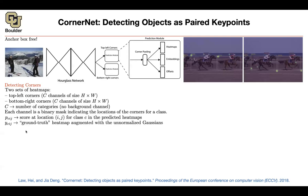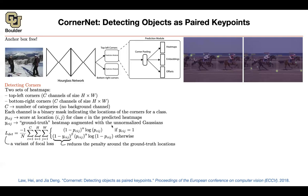The ground truth comes from your data: you know the top-left and bottom-right coordinates of your boxes. Rather than a one-hot vector, you smooth it out into a smoother function for the neural network to approximate. The loss function looks complicated but uses a variant of focal loss.